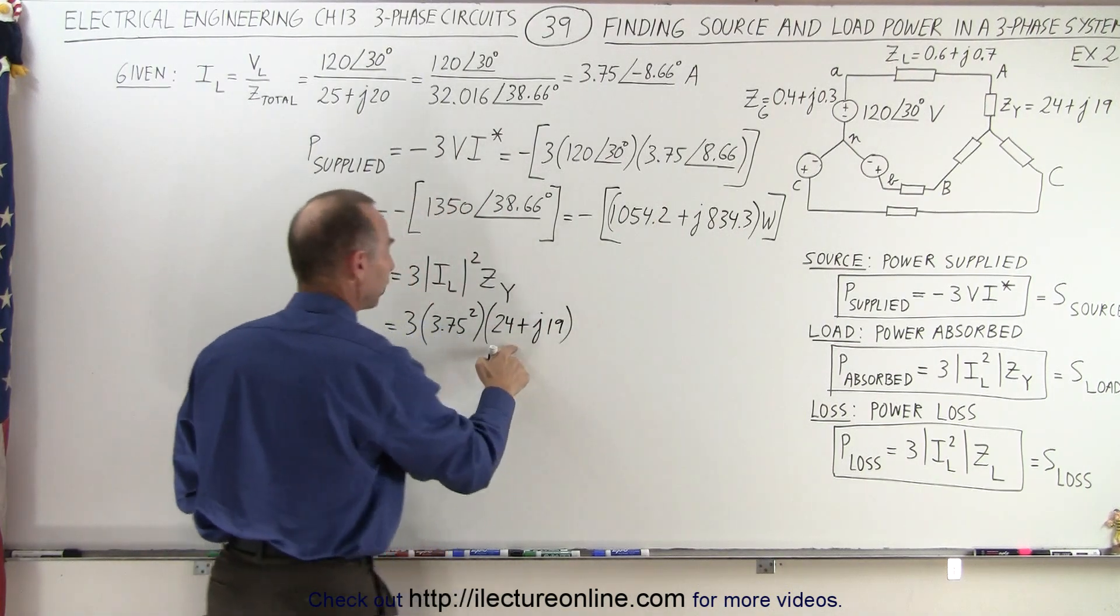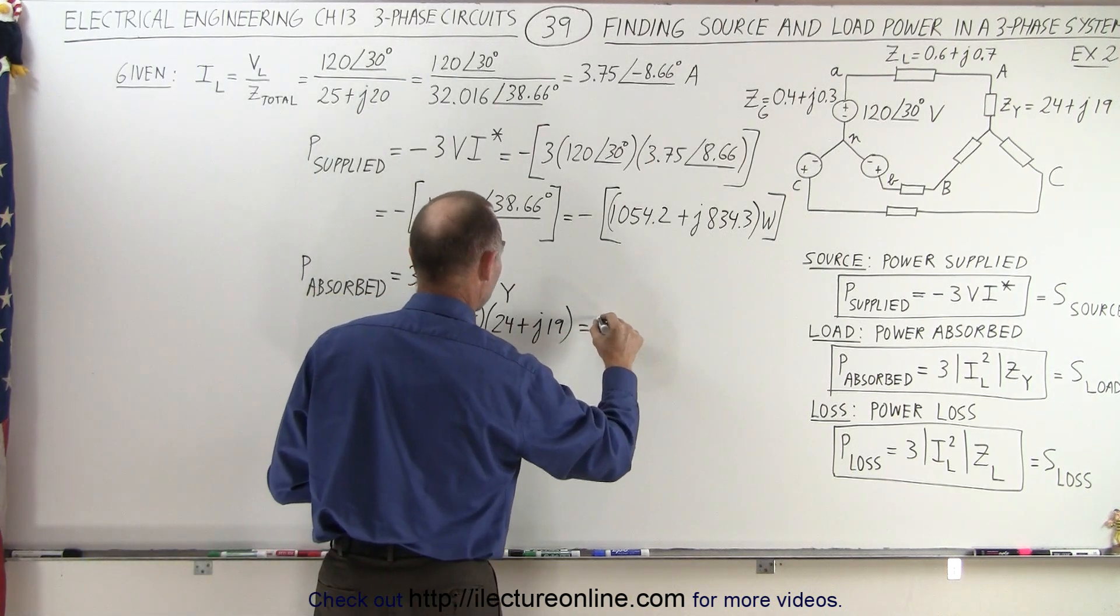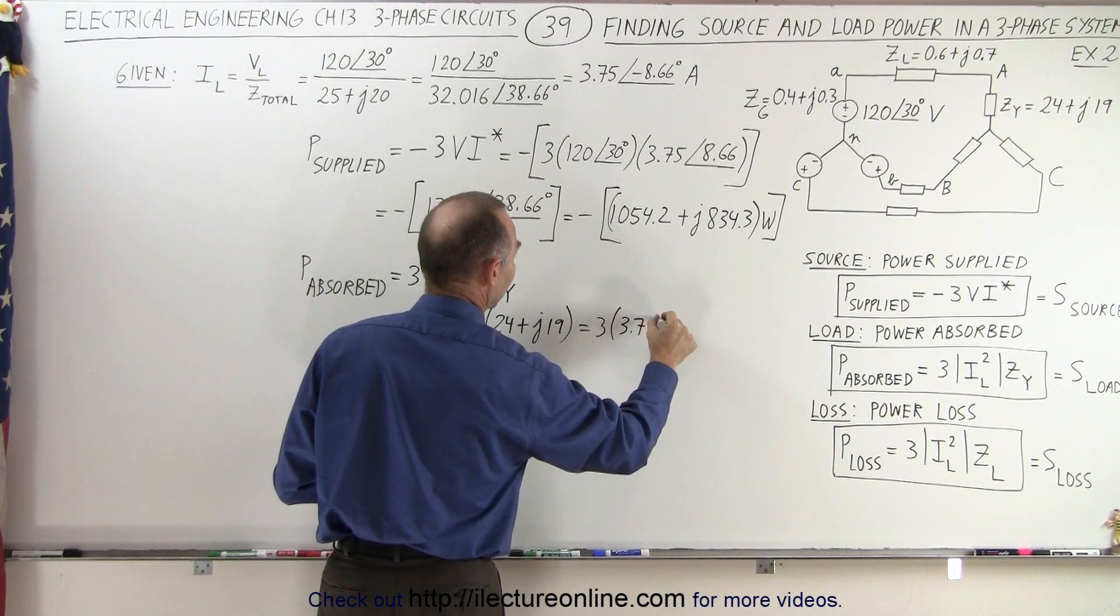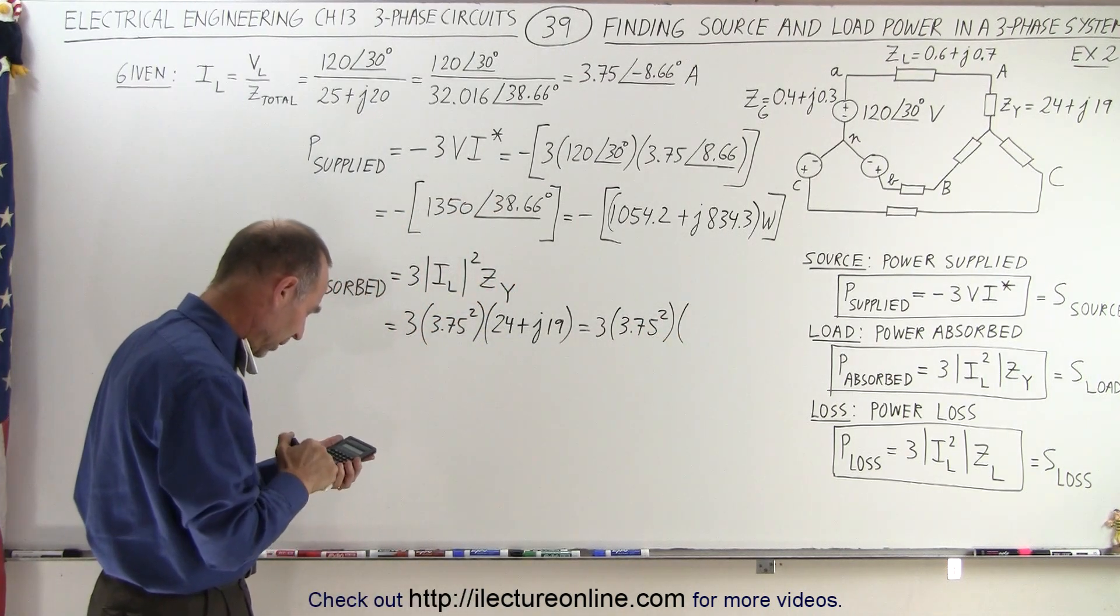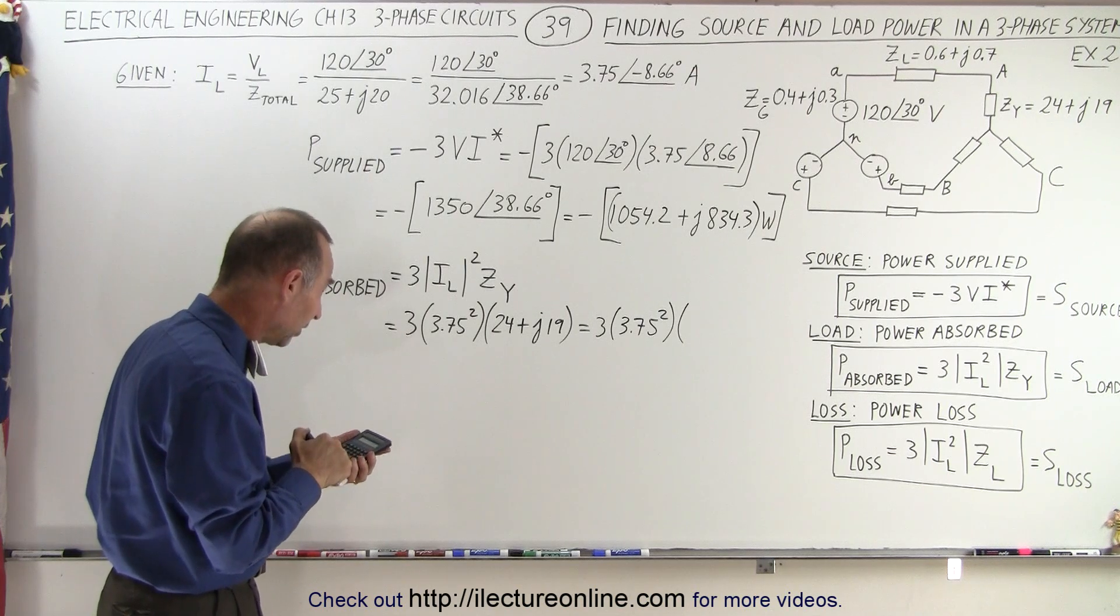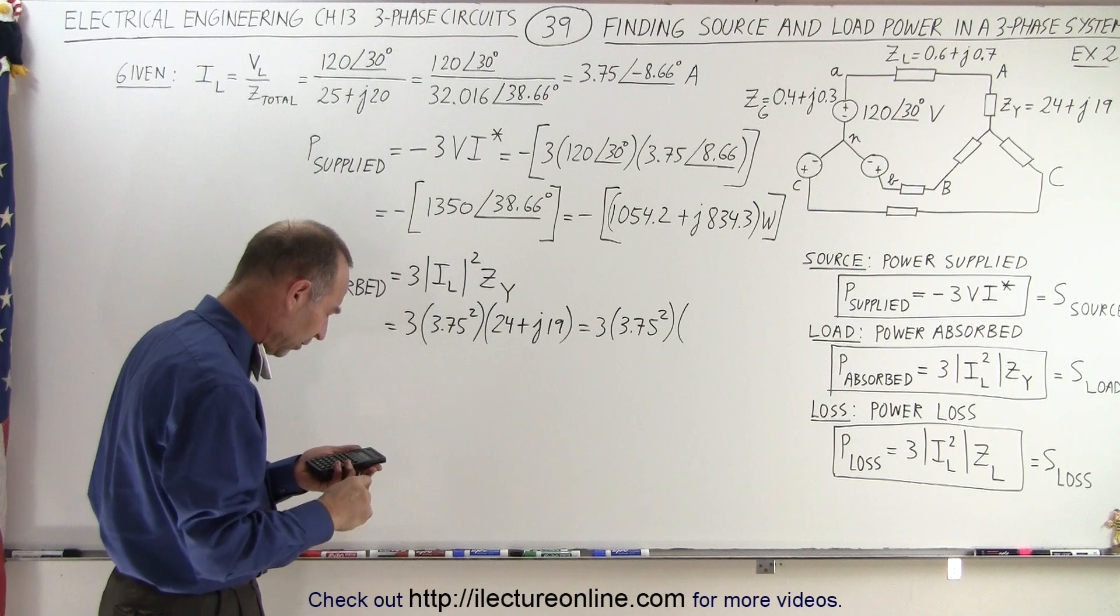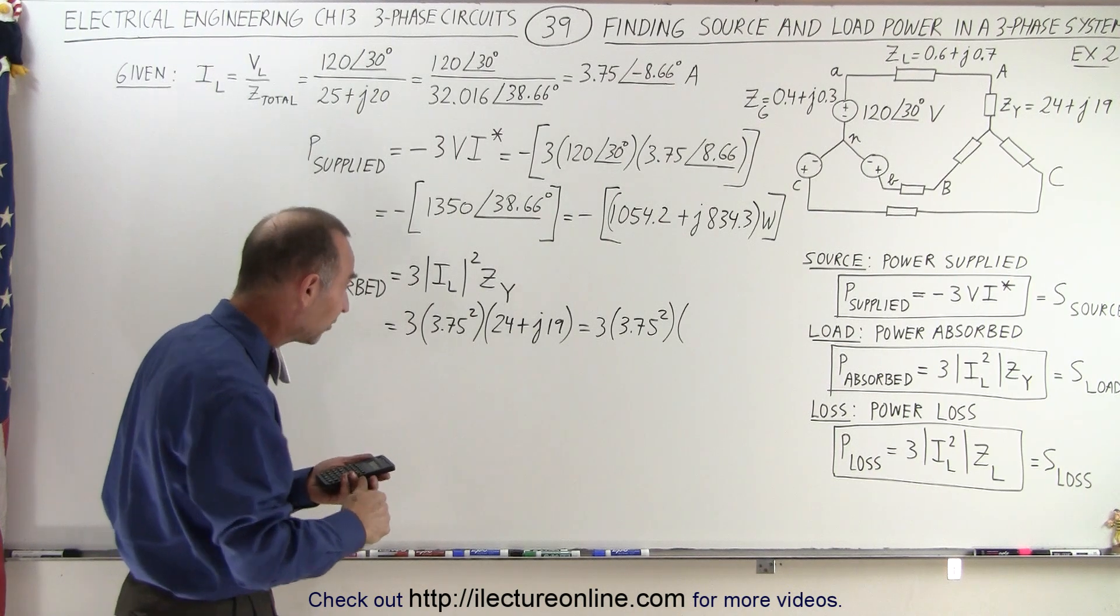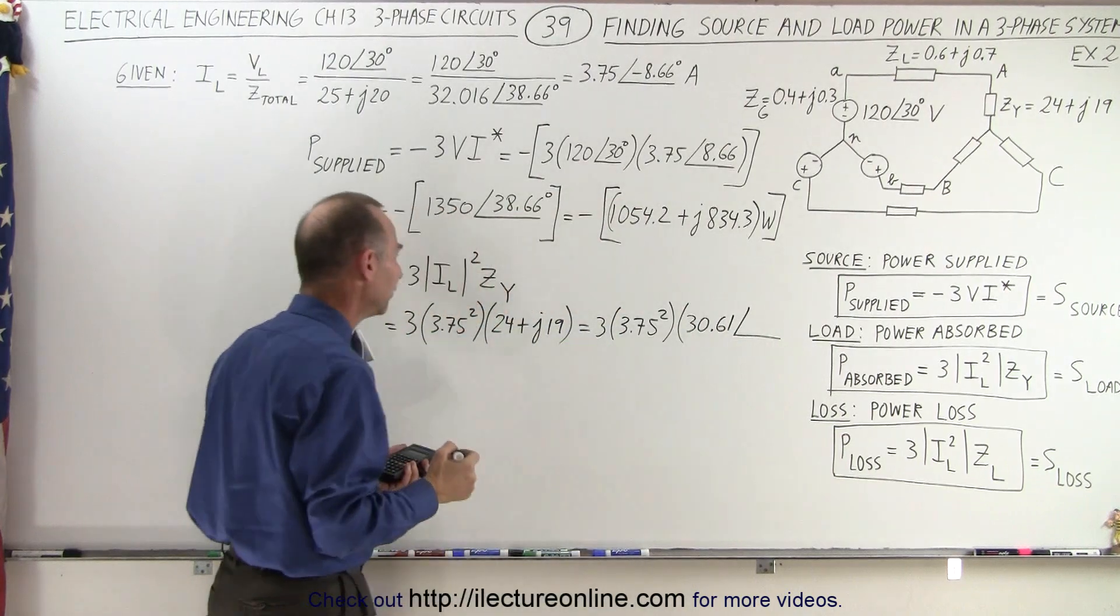Of course, we want to convert that into magnitude and phase angle format so we can multiply. So this is three times 3.75 squared times, okay, 24 squared plus 19 squared. Take the square root. That gives us 30.61.